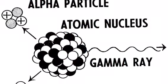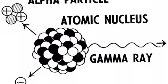Iron-59 decays into two types of radiation: gamma and beta radiation.